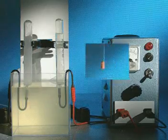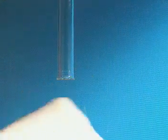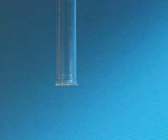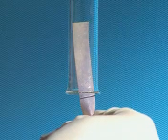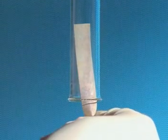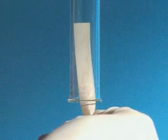The gas collecting at the positive electrode is tested with damp blue litmus paper. It goes red and quickly bleaches white. The gas is chlorine.